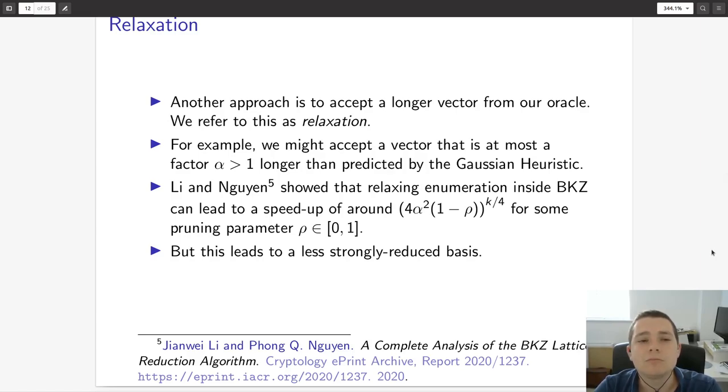Now, there are other approaches to this problem. A rather natural one is to merely loosen the requirements on the solution. In particular, it may be wise to accept a longer vector from our enumeration oracle. We refer to this process as relaxation. To give you an example, we might accept a vector that is at most a factor alpha, where alpha is some constant greater than 1, longer than is predicted by the Gaussian heuristic. This was recently studied by Lyu and Wen, and they showed that if one relaxes enumeration inside BKZ, you can get a speed-up of around 4 alpha squared times 1 minus rho all to the power of k divided by 4, where rho here denotes a pruning parameter in the range 0 to 1. As rho approaches 0, the pruning becomes more aggressive and the speed-up increases. One disadvantage is that we're accepting a vector further from ideal, and this can lead to our final basis being less strongly reduced.